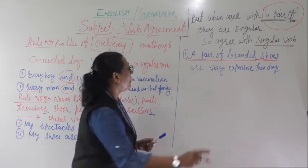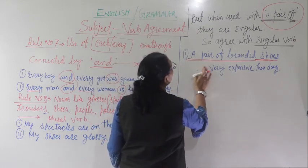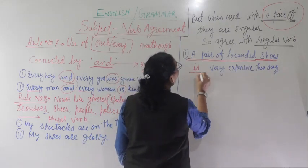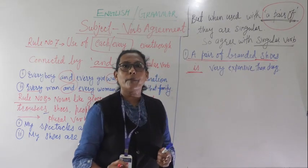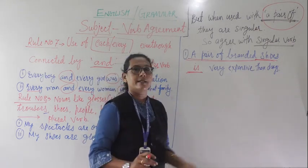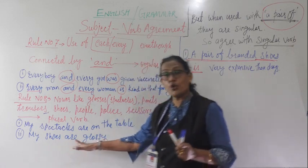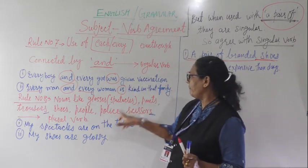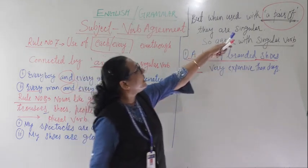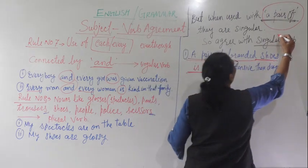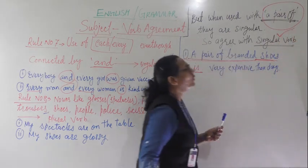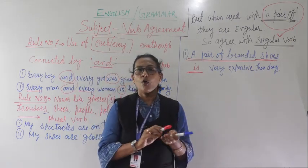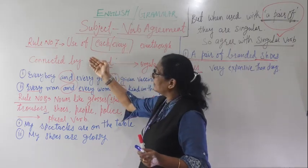'A pair of branded shoes is very expensive.' Here 'is' is the singular verb. So 'my shoes are glossy' uses a plural verb, but when attached with 'a pair of,' you always write the singular verb. It agrees with a singular verb — 'a pair of branded shoes is very expensive.'